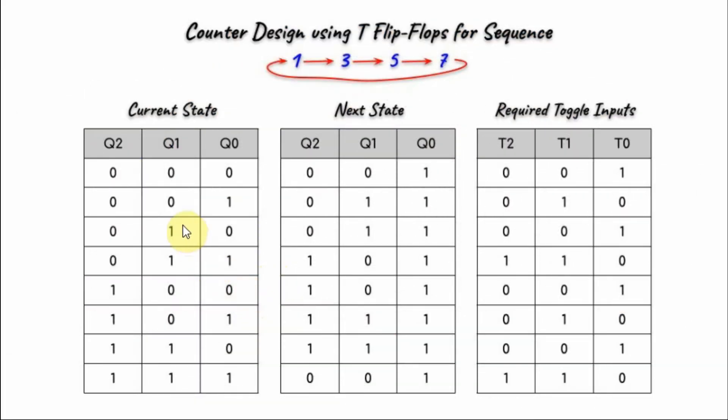Given the 3 flip-flops, we construct a truth table called the current state, which represents all possible outputs from all zeros to all ones. The next state table represents the required outputs based on the sequence of numbers to be counted: 1, 3, 5, and 7.